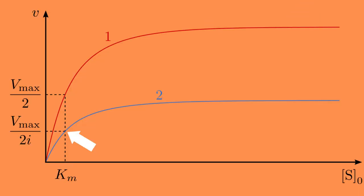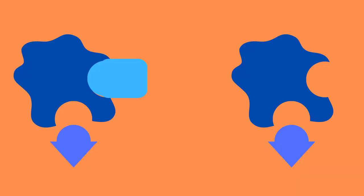However, unlike in uncompetitive inhibition, the Km value remains constant. This is because the inhibitor binds to the enzyme regardless of whether the substrate is present or not.